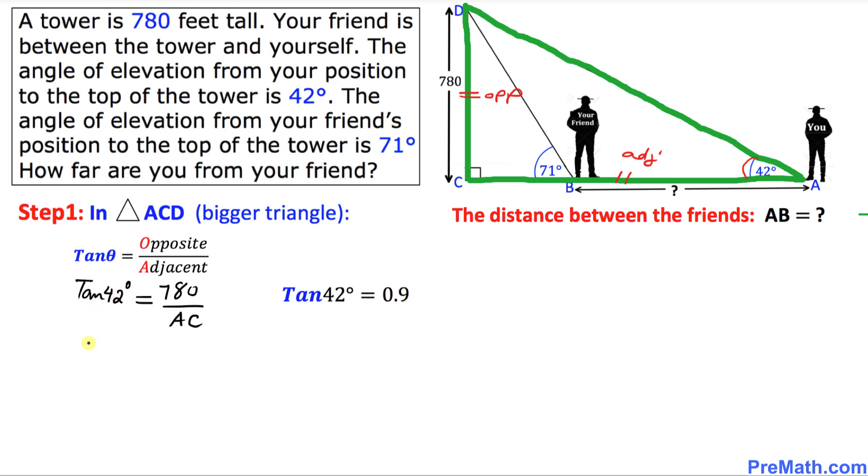Here I'm going to replace this one by 0.9 equal to 780 divided by AC. And here I'm going to put 1 underneath this number. And here I am going to cross multiply. So 0.9 times AC, this is going to become 0.9 AC equal to 1 times 780 is going to become 780.